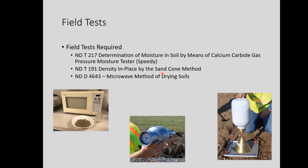The speedy moisture tester is probably the fastest way to get a reading. The T191 density in place by the sand cone method is another way to determine the in-place density of the material you're compacting. The last one is the microwave method of drying soils — the third way to do a moisture test in the field. More and more of these are being brought to the field because you can hook up a generator or use your vehicle to run it, making it very practical.